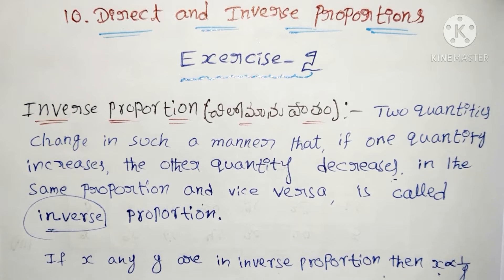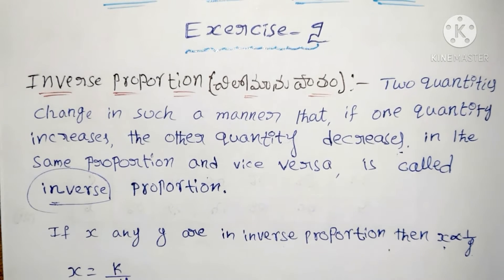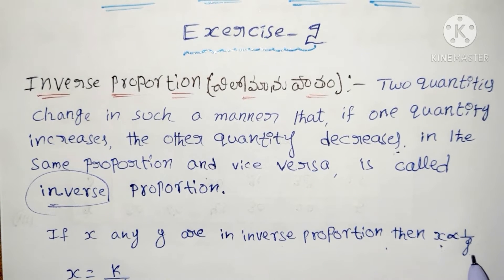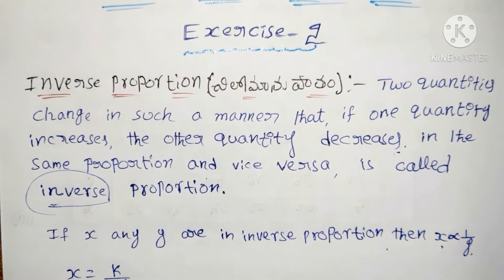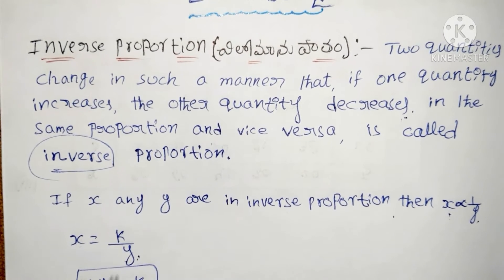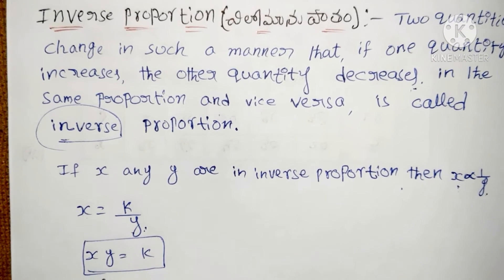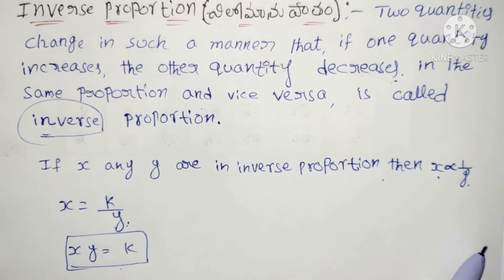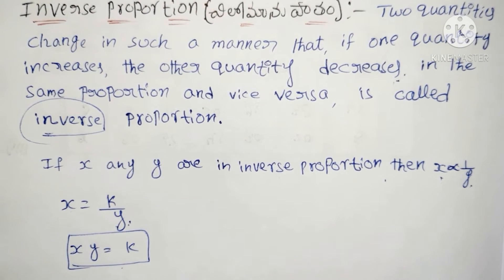If x and y are in inverse proportion, then x is inversely proportional to 1 by y. So x is equal to k by y, which means x times y is equal to k — the constant.